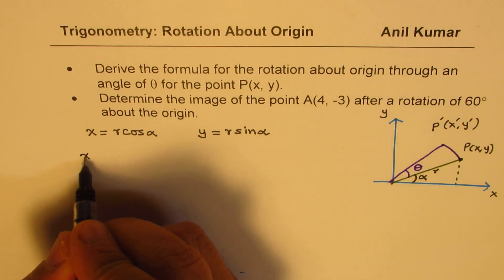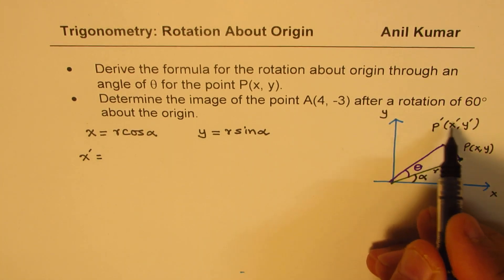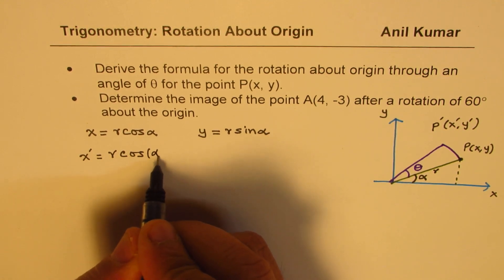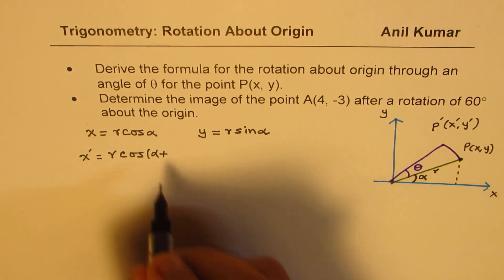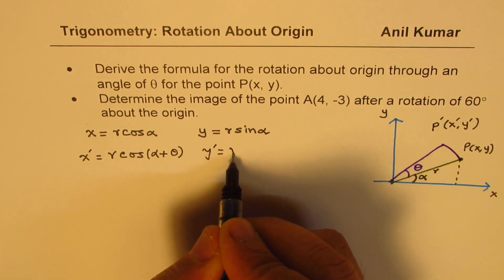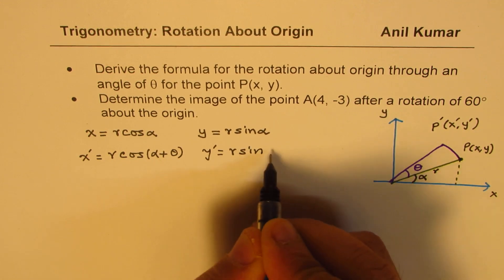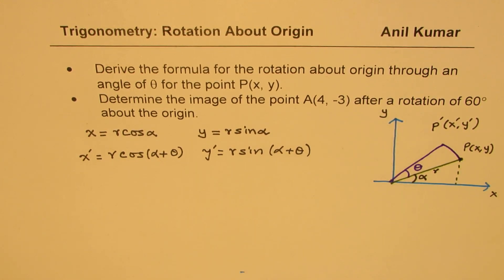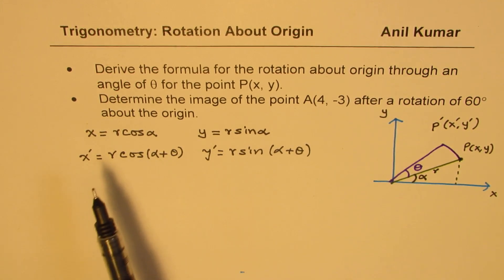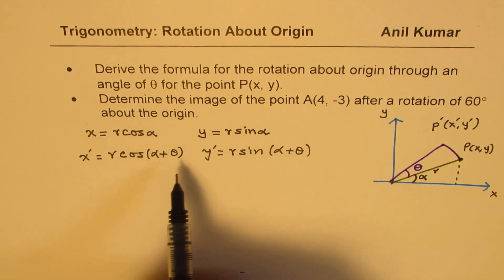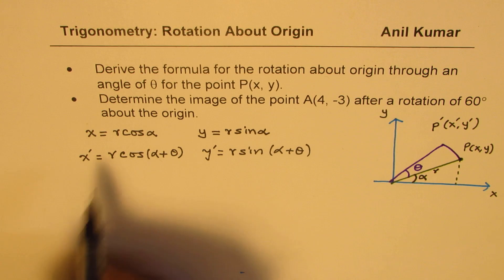Now, x' is equal to r·cos(alpha + theta), and y' will be equal to r·sin(alpha + theta). We can find these points in terms of r·cos(alpha) and r·sin(alpha) by using the compound angle formula, which I am going to do now.